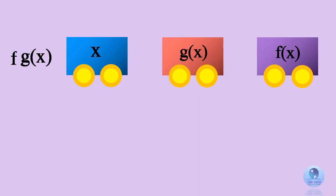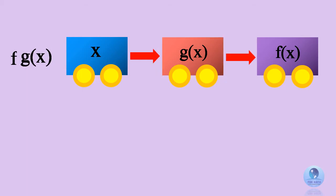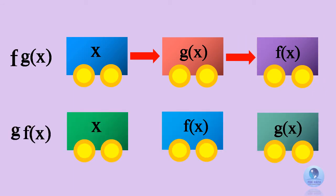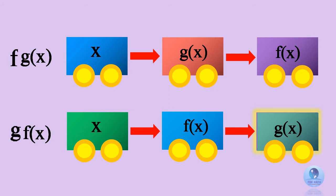Sequence plays an important role in composite functions. For example, if we write f of g of x, it means x will first go through the function g of x and subsequently the function f of x. If we write g of f of x, it means x will first go through the function f of x and subsequently g of x.